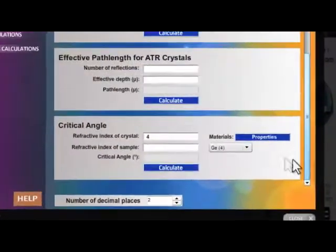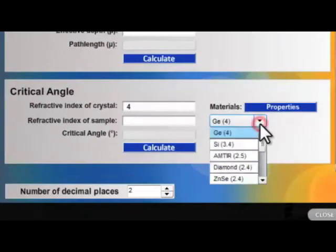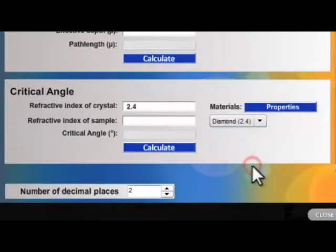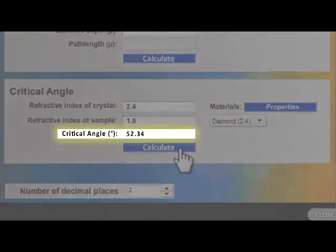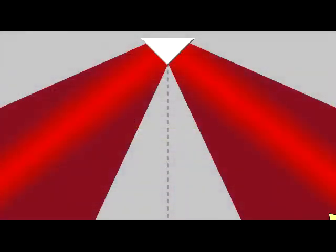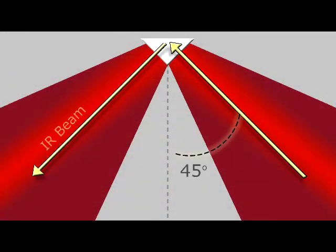In this example, we'll use the Gladiator Diamond ATR. Select the crystal and enter 1.9 for the refractive index of the sample. The critical angle is 52 degrees, which is greater than the accessory's angle of incidence of 45.